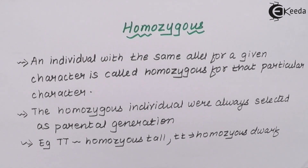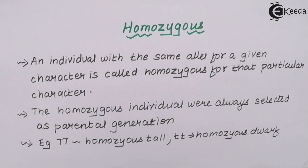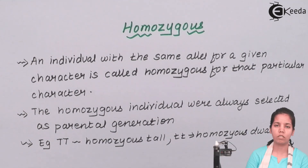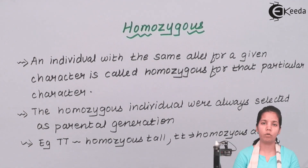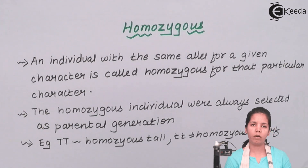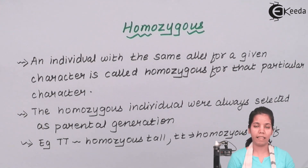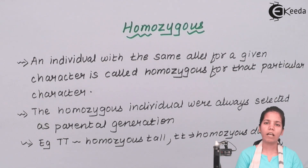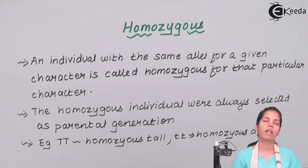Students, this definition was about homozygous — what capital T, capital T means and what small t, small t means. We also touched on how the concept of homozygous affects all three different laws of Mendel, which we will be studying soon. I hope you are all clear with this concept of homozygous. Thank you.